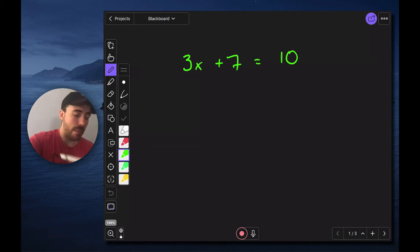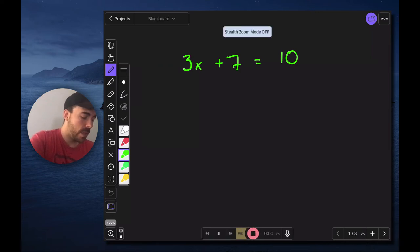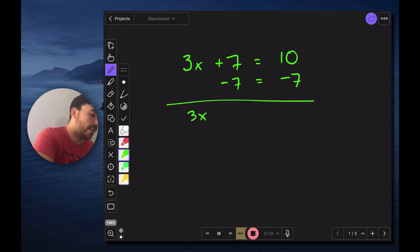All right so here let me solve this problem. We hit record and now you're going to record what you're saying. So here 3x plus 7 equals 10. The first thing I'm going to do is subtract 7 from both sides and now I'll have 3x equals 3. Now I'm going to divide 3 from both sides and I have x equals 1.